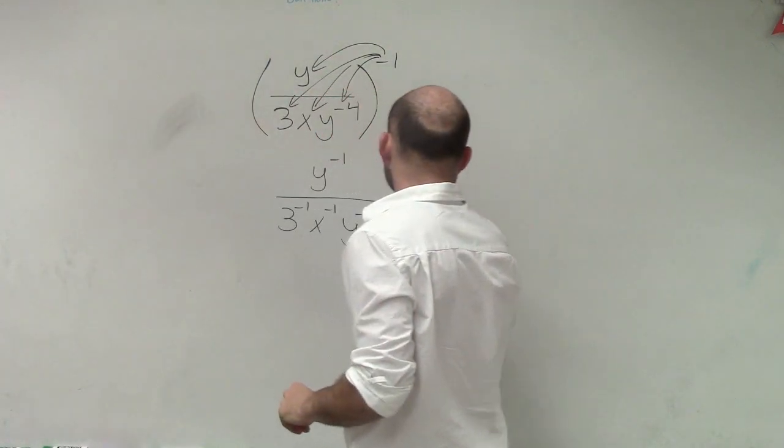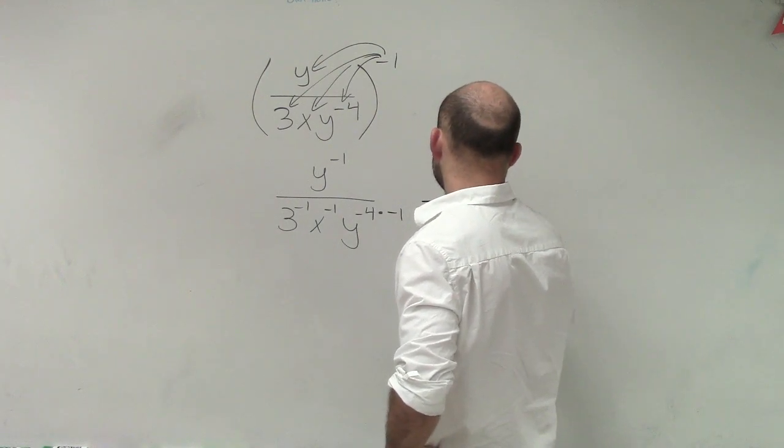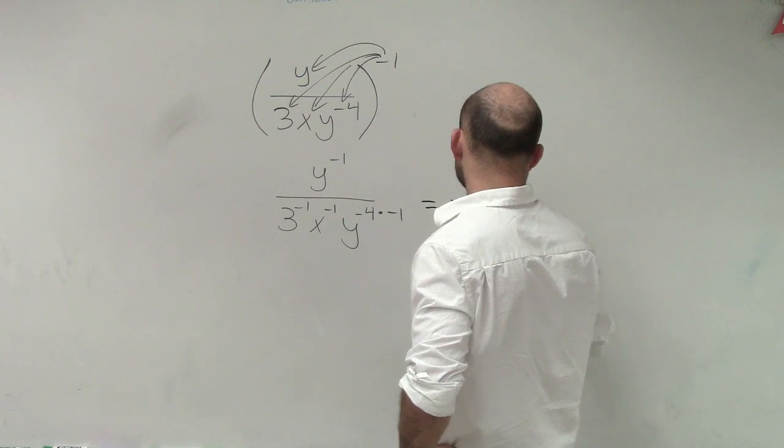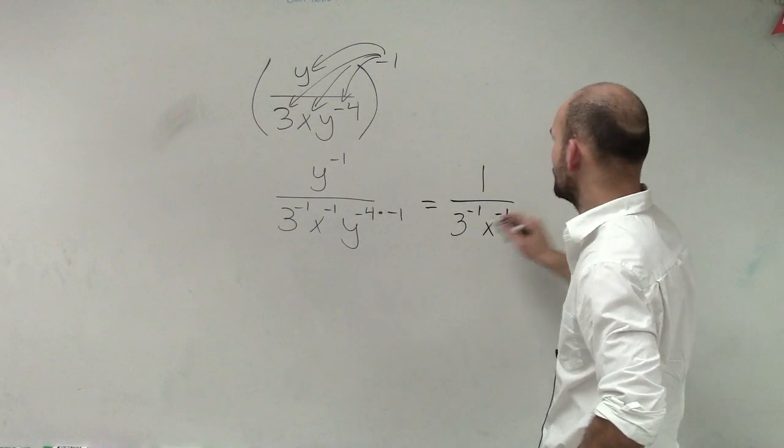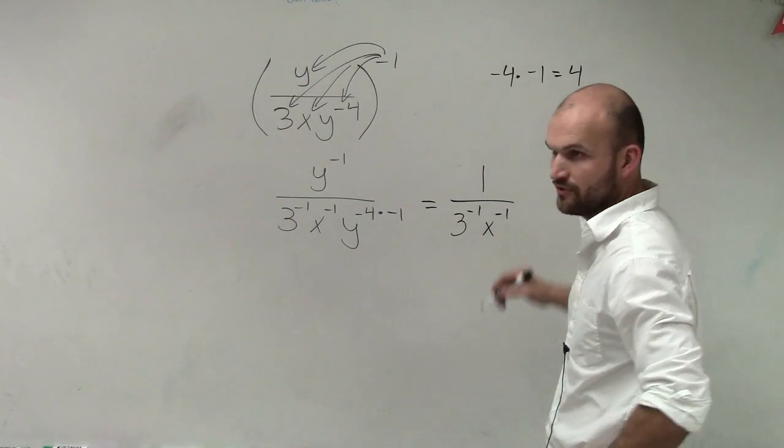So this is now going to equal 1 over 3 to the negative first power x to the negative first power. And then what I'm going to do is negative 4 times negative 1 equals positive 4.